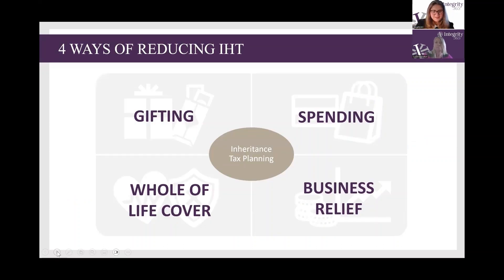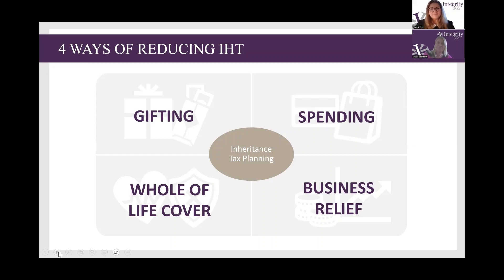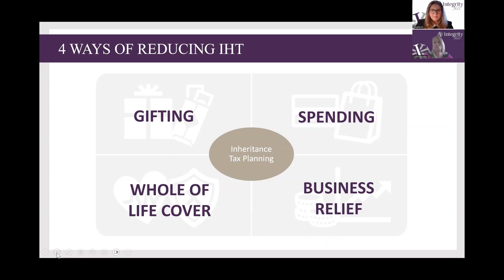When it comes to inheritance tax, you've got four options. The first — which my mum and dad seem to be taking very seriously — is to spend it. As my dad likes to call it, 'skiing': spending the kids' inheritance. If you spend more money, you'll have less in your estate, which is a very good way of enjoying the life you've got. There's no point in not enjoying the lives you've built together and then passing all that money on but losing some of it to inheritance tax.